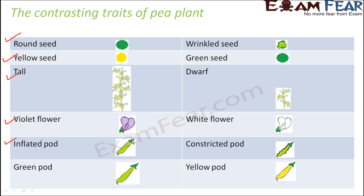The pod — this is how the pod looks like; inside the pod you have the seeds. The shape of the pod in some plants was inflated, smooth on the boundaries, whereas in some plants they had a curled boundary — that is the constricted pod. In some plants the pod was green in colour, whereas in some the pod is yellow in colour. So these were some of the contrasting traits.